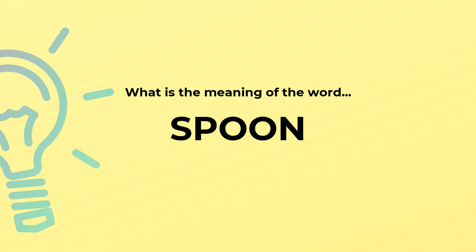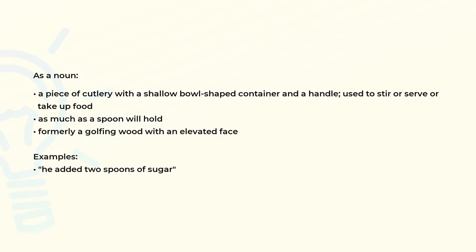What is the meaning of the word spoon? As a noun: a piece of cutlery with a shallow bowl-shaped container and a handle, used to stir or serve or take up food; as much as a spoon will hold; formerly a golf wood with an elevated face. Example of use: He added two spoons of sugar.